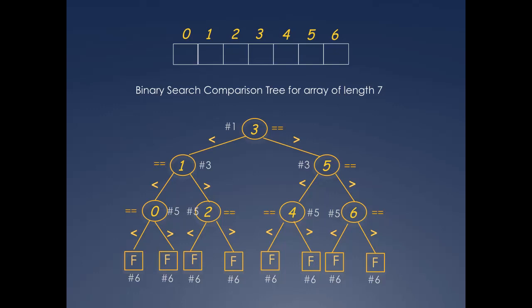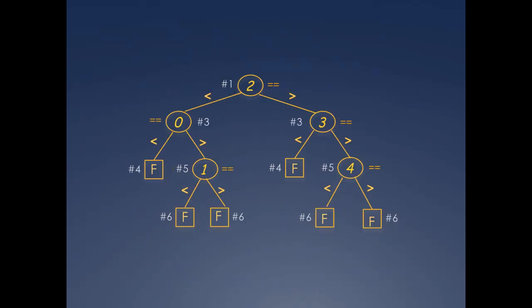Okay, we're all set to compute the average number of comparisons. Let's just look at successes first. Here's a comparison tree again for an array of length 5. How do you compute the average number of comparisons for success?